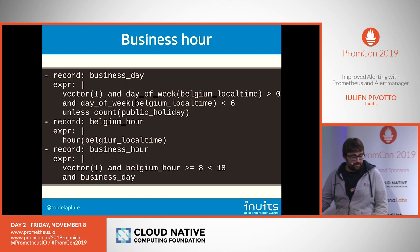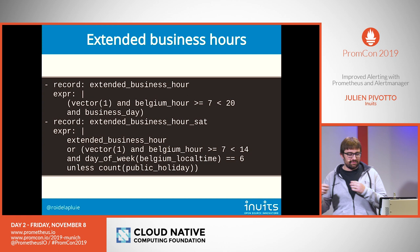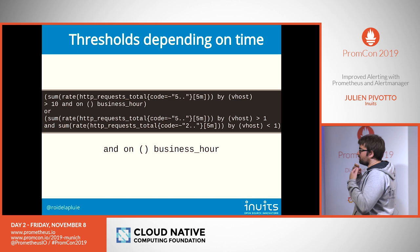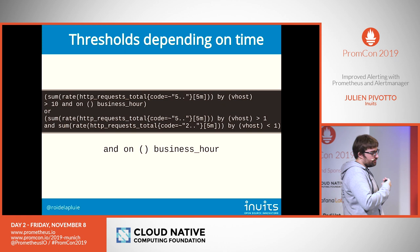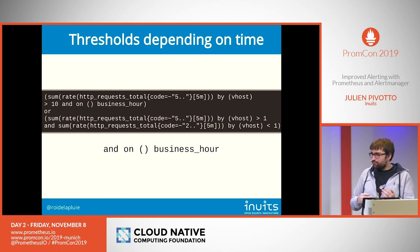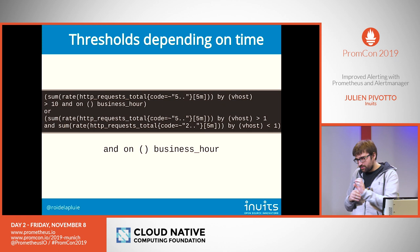Now you can build alerts based on time. You take your PromQL query and AND it with 'on_business_hour'. With that, the query only gives results during business hours. You can also apply different thresholds for inside vs. outside business hours — outside business hours you probably require more signals before concluding something is wrong, while inside business hours that's quite straightforward.